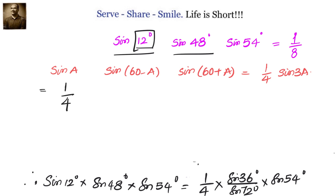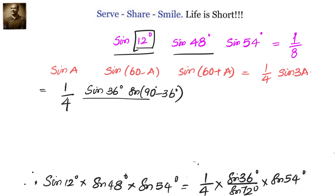How can we write sin 54 degrees? We want to change it into 36 degrees, so we write it as sin(90 minus 36) degrees, so that it becomes cos 36 degrees. In the next step, we have 1/4 into sin 36 degrees into sin(90 minus 36) degrees divided by sin 72 degrees, which equals 1/4 into sin 36 degrees into cos 36 degrees divided by sin 72 degrees.